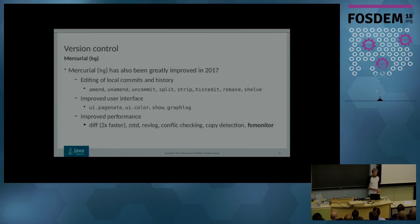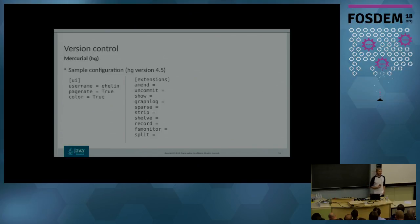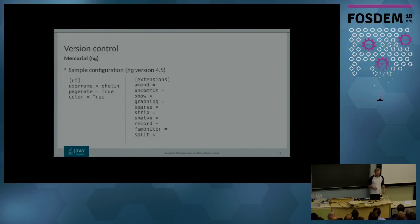For those of you who work on OpenJDK, I can highly recommend the fsmonitor extension, which uses Watchman to get file notifications when things have changed, making commands like hg status or hg diff execute much faster. Here's my hgrc configuration file for Mercurial 4.5: I put my OpenJDK username in there, I turn on the pager and color settings for better terminal output, and I enable a bunch of extensions — some experimental, some more stable, but all vital to my workflow.